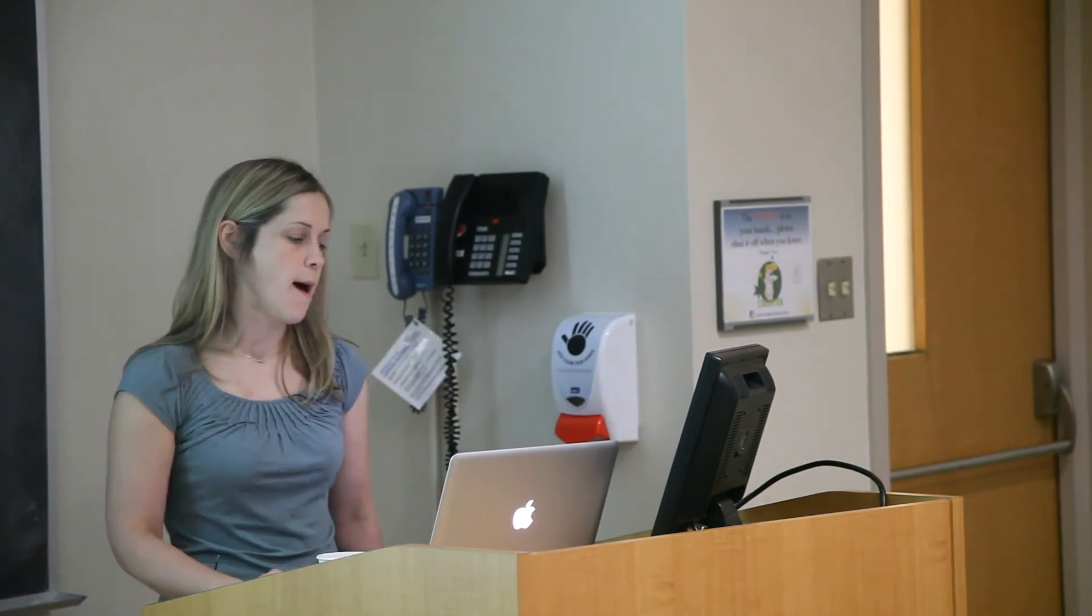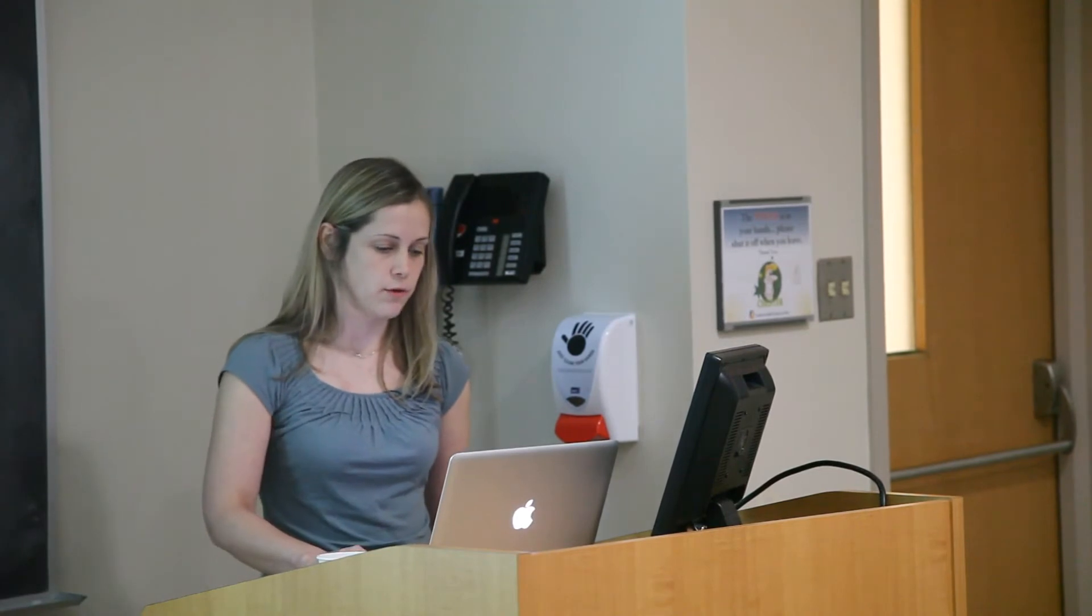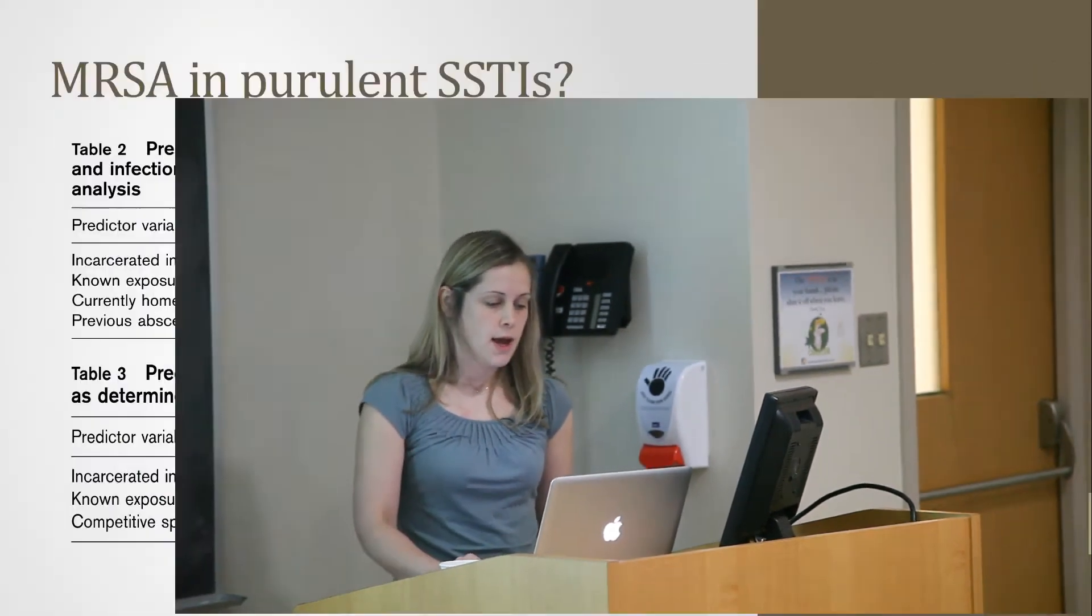They included everything from cellulitis to abscesses to ulcers, involved 205 patients, and they did two things. They defined colonization and infection: colonization was people who had nares or throat culture for MRSA, and infection was infection sites cultured for MRSA. They found a bunch of predictor variables associated with MRSA infection and colonization. In summary, incarceration in the past year, known exposure to MRSA, competitive sports, homelessness, and previous abscess in the past year were associated with MRSA colonization or infection.